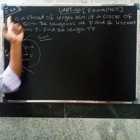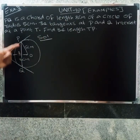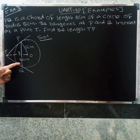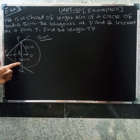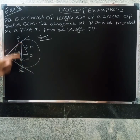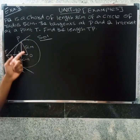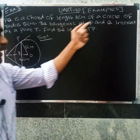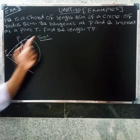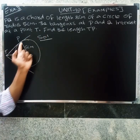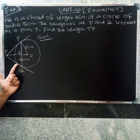Unit 10. PQ is a chord of length 8 centimeters. The chord passes through the center part — the medium part of the circle. The circle has a radius of 5 centimeters. The tangent at P and Q intersect at a point T. Find the length TP.